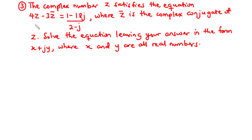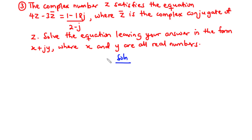For this question, we have an equation containing z and z bar. We are told that z is a complex number and z bar is the complex conjugate of z. We are asked to solve the equation for z, leaving our answer in the rectangular form x plus jy, where x and y are real numbers. Since we don't know the value of z, we know a complex number can be represented as x plus jy. Therefore, let's assume z equals x plus jy.